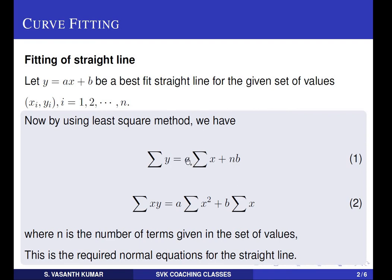Finally, substituting the values of summation y, summation x, summation xy, summation x², and summation x, you are going to get the values of a and b. Then substitute those a and b values to get a best fit straight line.